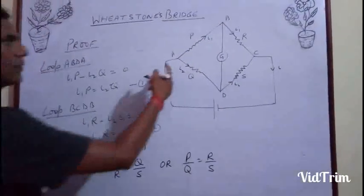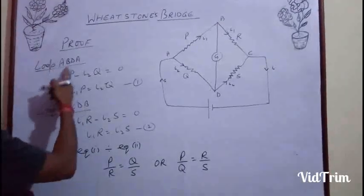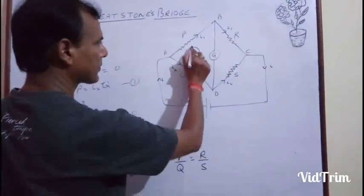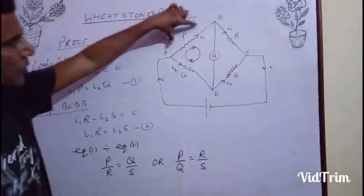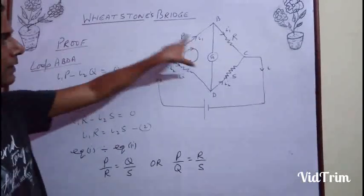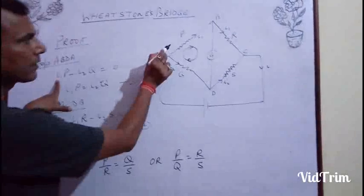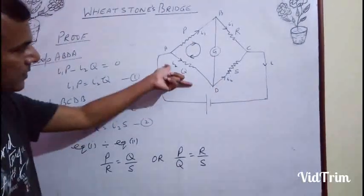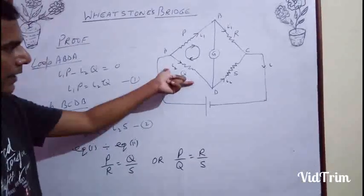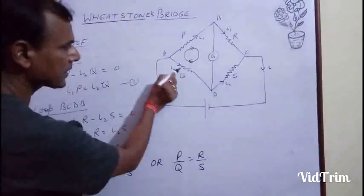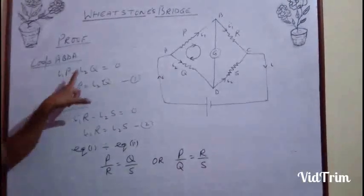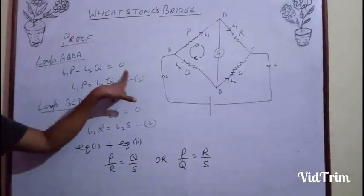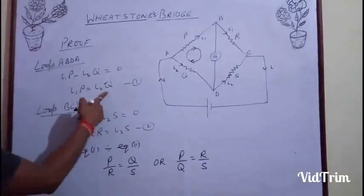Now, applying Kirchhoff's second law in loop ABDA, taking clockwise direction as positive. The product of current and resistance: current is I1, resistance is P, so we get I1·P, which is positive as current and direction are the same. No current flows through the galvanometer branch. Coming to the other side, current is I2 and resistance is Q, giving I2·Q. Since I2 is going opposite, we get: minus I1·P minus I2·Q equals zero (net EMF is zero as there is no source). This gives I1·P = I2·Q. This is equation 1.